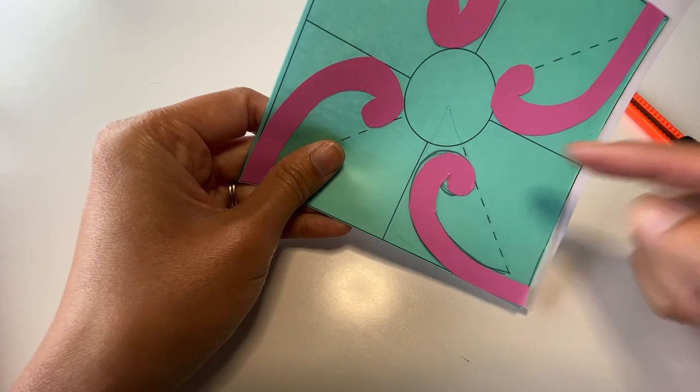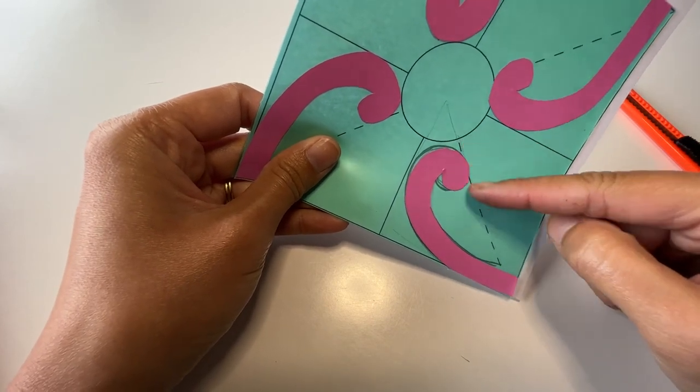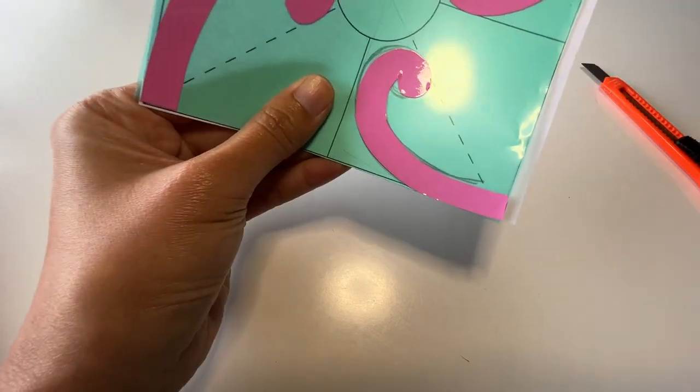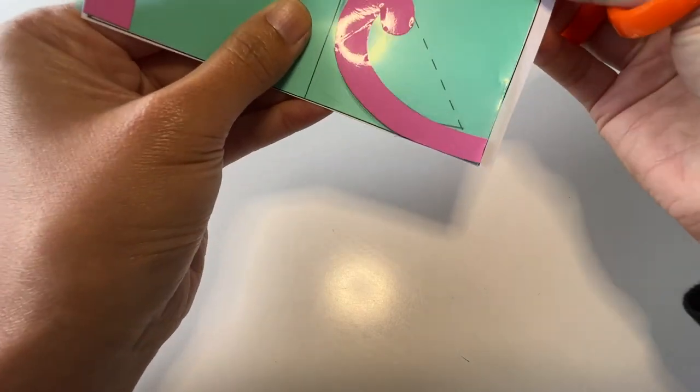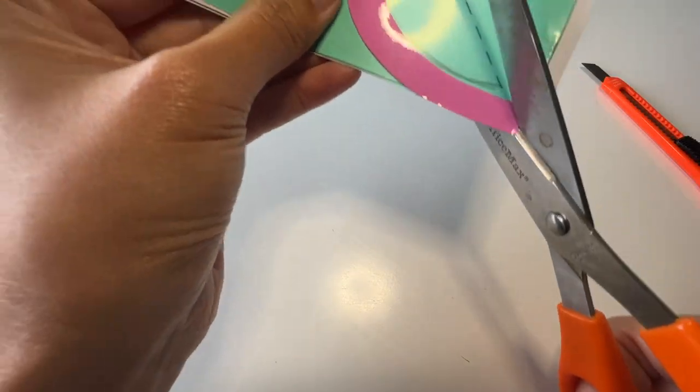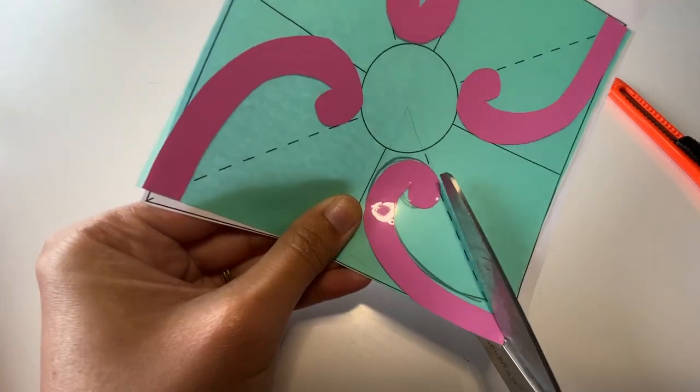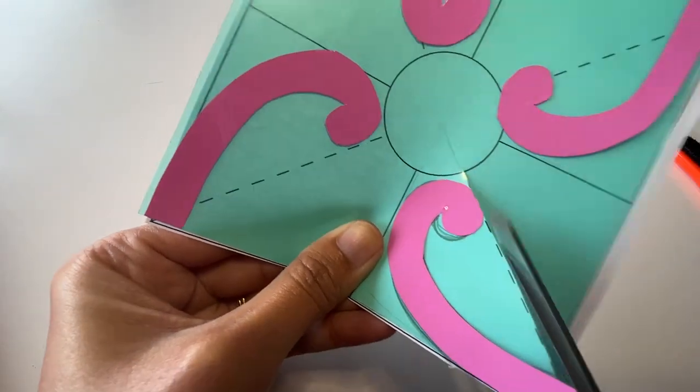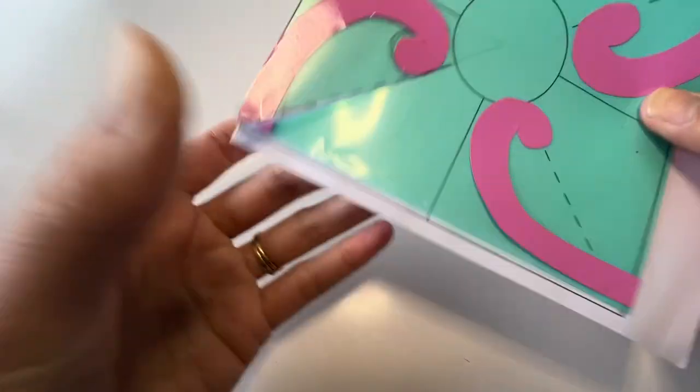The next part is we want to cut down the dotted line. Just like so. So here we go. I've got my scissors. Let me just try and line it up a little bit. And then I'm going to cut up to the circle. We don't want to cut all the way.